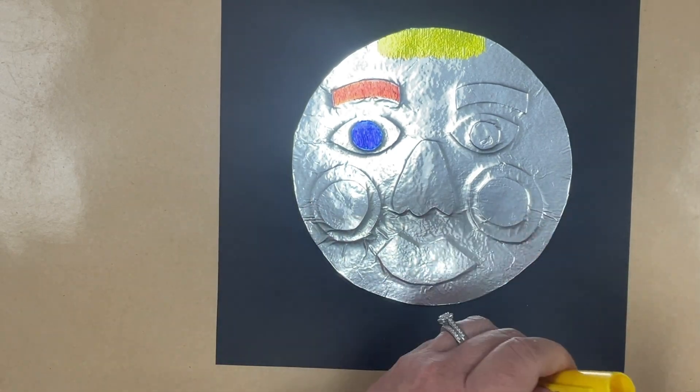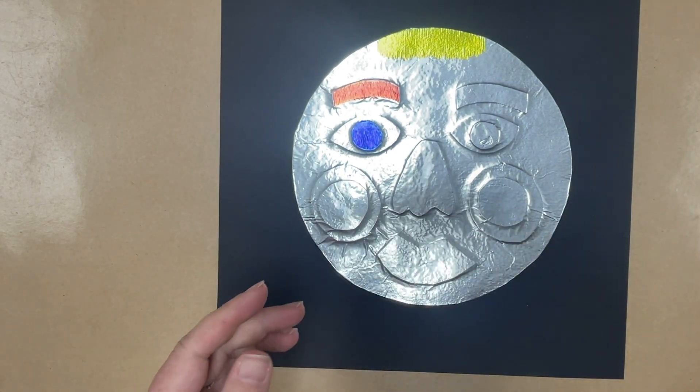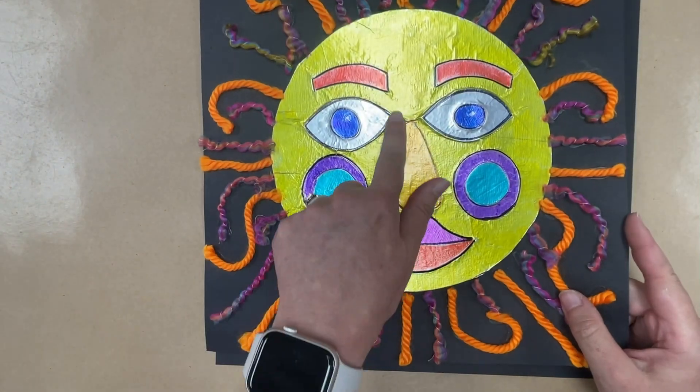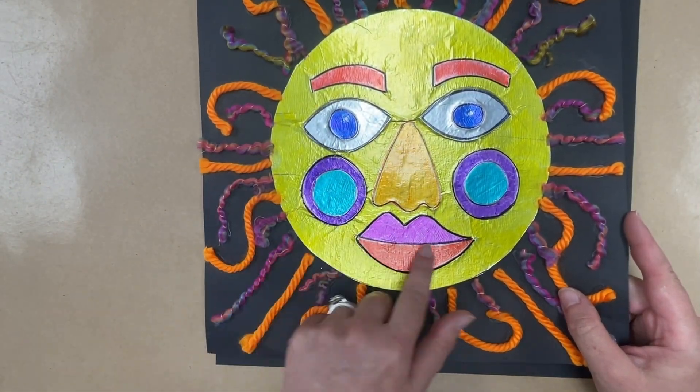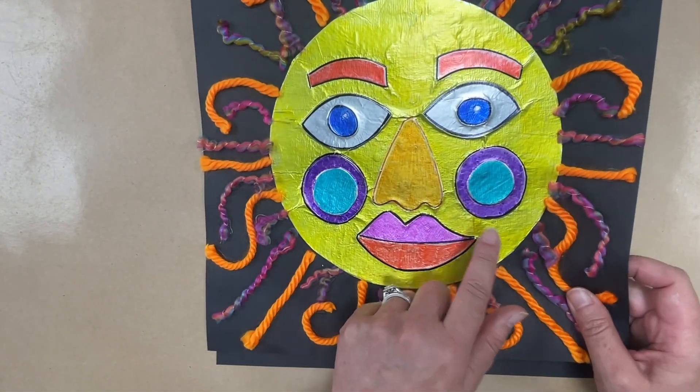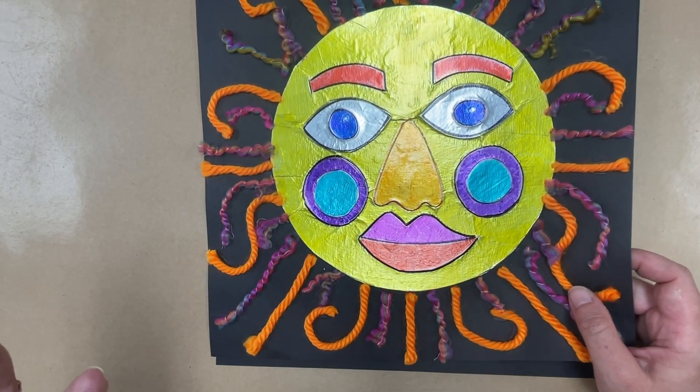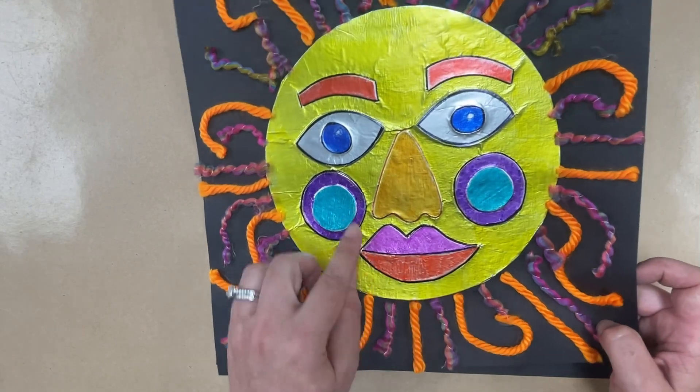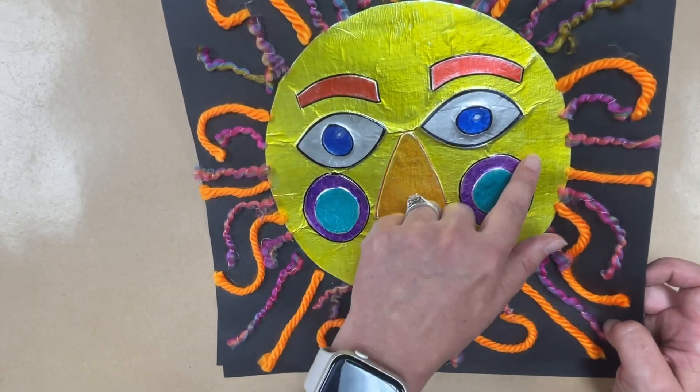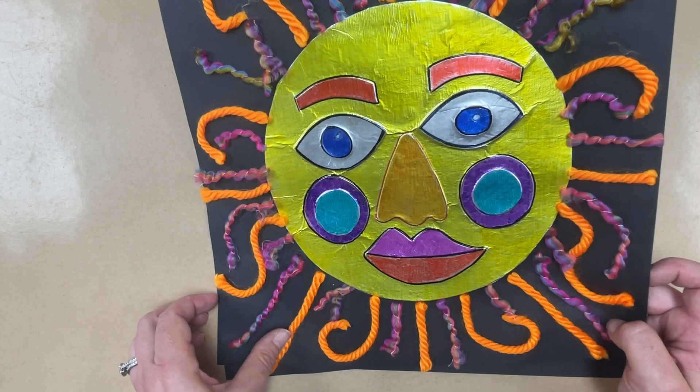Okay, so once you get all of that colored in, I want to show you something else on my finished one. I outlined all of my shapes with a black Sharpie and that just really made them stand out and pop a little bit more. So if you like that look, you can do that. You don't have to, but I really like the look of outlining all of my shapes.